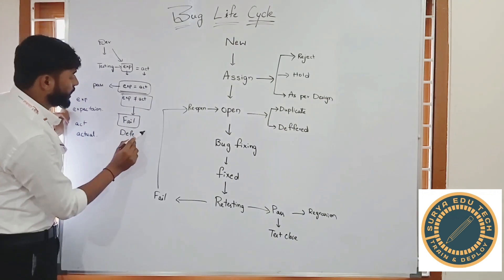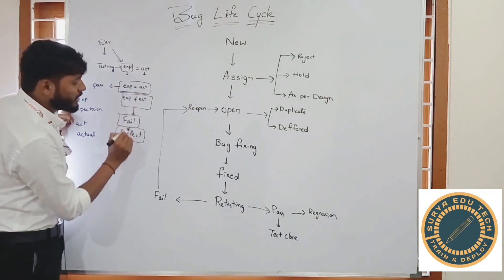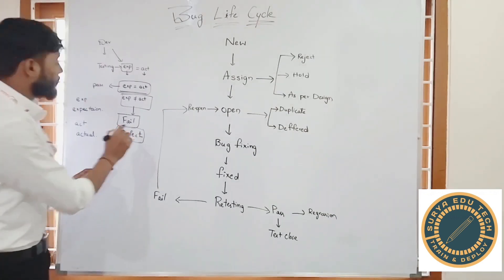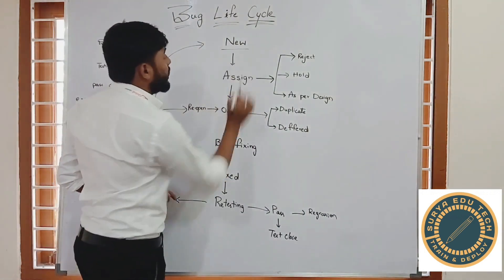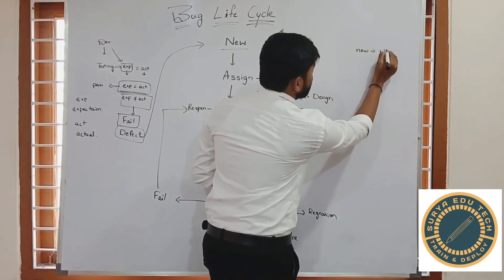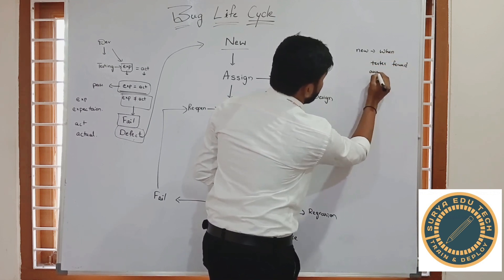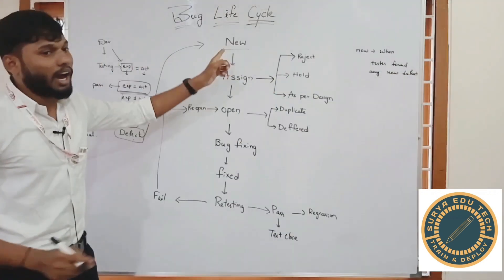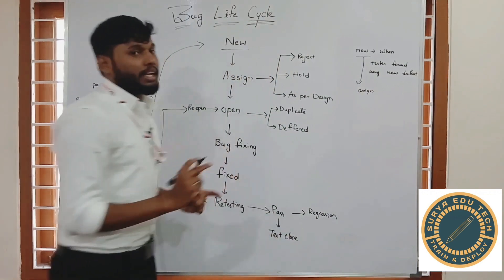When the tester finds any defect — where expectation is not matching to the actual — the tester sends the defect to the development team. When a tester finds any new defect, it is given the status of 'New'. After sending it with a new status, the developer goes to the assigned phase.